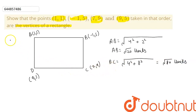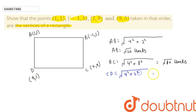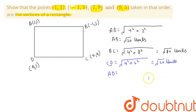Now we calculate the length CD using the distance formula. CD equals the square root of (9 minus 5) squared plus (7 minus 9) squared, which is the square root of 4 squared plus 2 squared, giving us √20 units. Then for AD, applying the distance formula gives us the square root of (5 minus 1) squared plus (9 minus 1) squared, which equals √80 units.